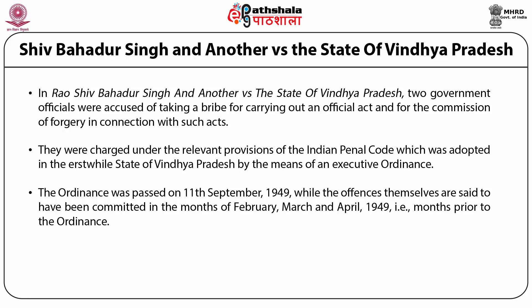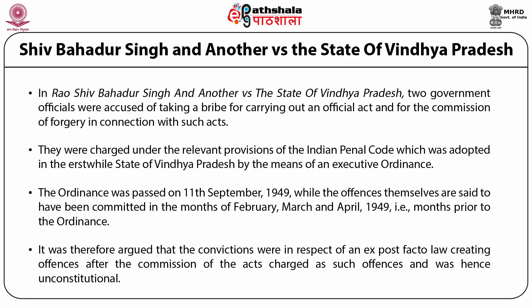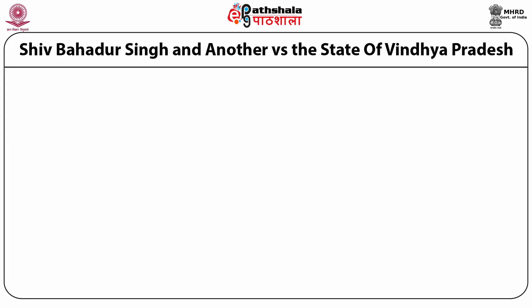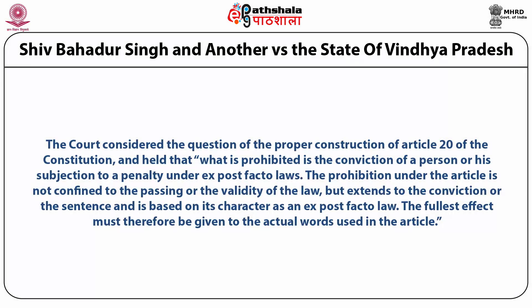The appellants in that case argued that the convictions were in respect of an ex post facto law creating offences after the commission of the acts charged as such offences and was hence unconstitutional. In Ravadir Singh, the court considered the question of the proper construction of Article 20 of the constitution. This is what they held, and I quote: 'What is prohibited is the conviction of a person or his subjection to a penalty under ex post facto laws. The prohibition under the article is not confined to the passing or the validity of the law but extends to the conviction or the sentence and is based on its character as an ex post facto law. The fullest effect must therefore be given to the actual words used in the article.'